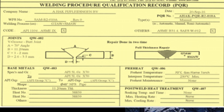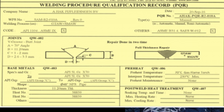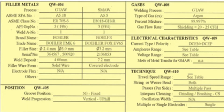At the top you can see the PQR number, WPS number, the weld process — all similar to a WPS — along with the applicable code and any reference code. There are sections for joint design, base metals, preheat, and post-weld heat treatment. We won't go into much detail here as we already discussed these during WPS preparation.